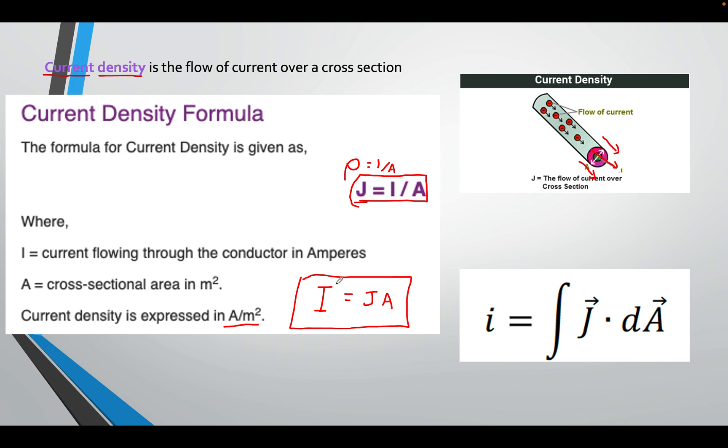Rearranging the formula nicely, it will be I equals JA. Sometimes it's written like this in integral form, J multiplied by a small area dA.